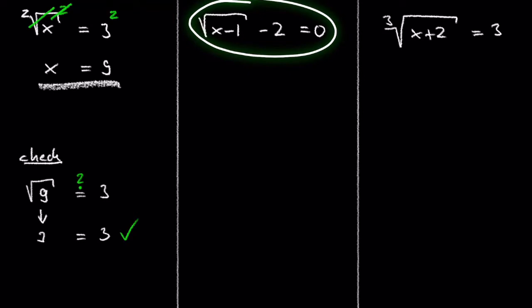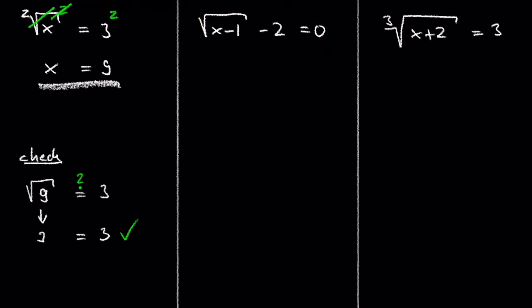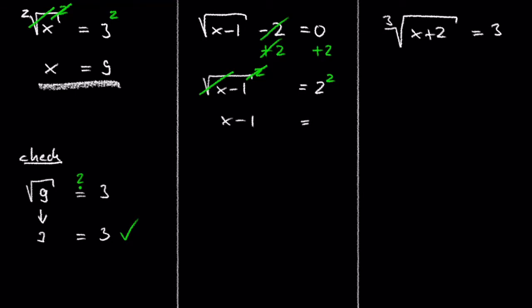Let's say we have the square root of x minus 1 minus 2 equals 0. The first step is to isolate the radical by adding 2 to each side of the equation. Minus 2 plus 2 cancel each other out, and 0 plus 2 is 2. Now the second step is to square each side to cancel out the square root. After canceling out the square root and the power of 2, we get x minus 1 equals 2 squared, which is 4.